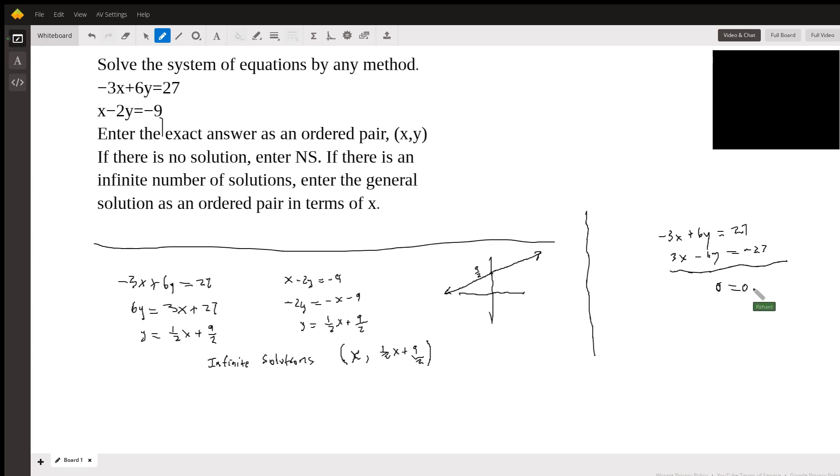But if you get a zero equals zero, as we do here, it means that the two lines are identical. Okay, so that's it for this problem. I'll see you again next time. Bye-bye.